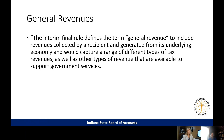The interim final rule says this is for general revenues, which includes revenues collected by the units from its underlying economy and captures a range of different types of tax revenues as well as other types of revenues. A lot of what we're going to give you today — along with some additional desk references — is about determining whether something is a general revenue or not.